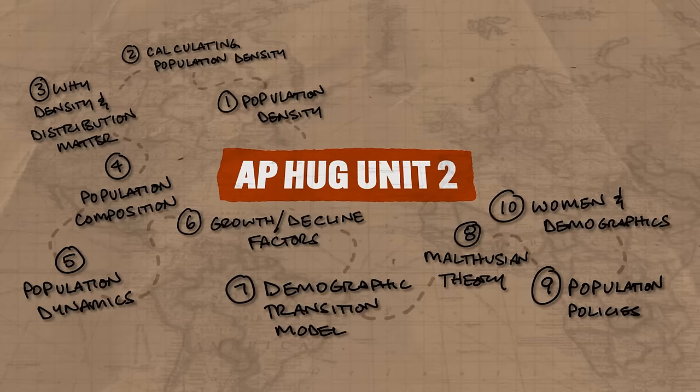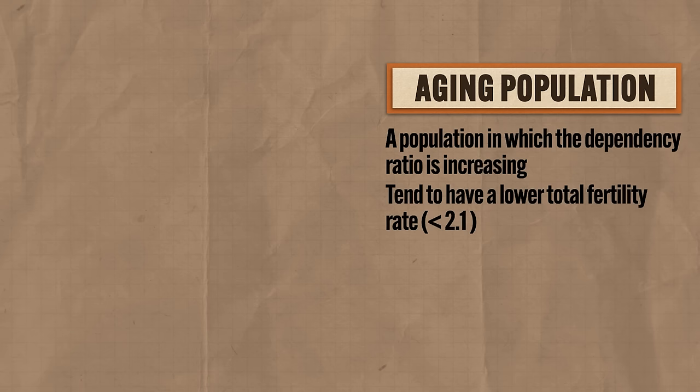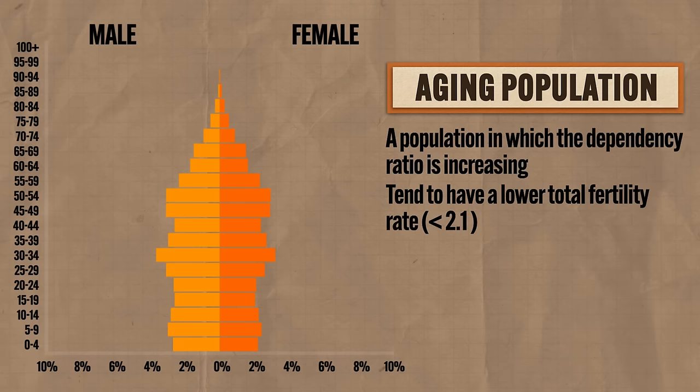Now let's focus on the causes and consequences of an aging population. An aging population is one in which the dependency ratio is increasing and the total fertility rate is below 2.1. In terms of a population pyramid, aging populations have a middle cohort larger than the lower cohort. An aging population is determined by three factors: the birth rate, the death rate, and longer life expectancy.